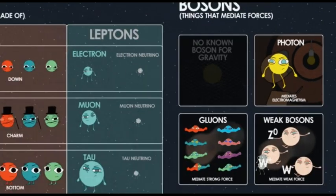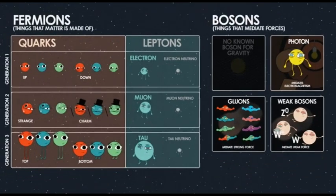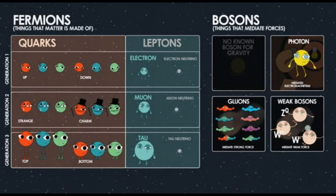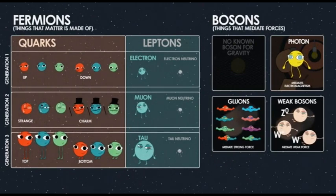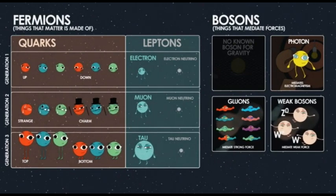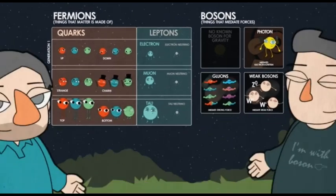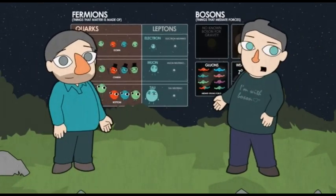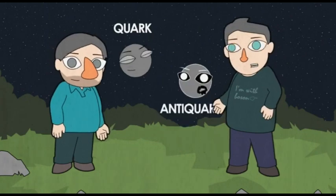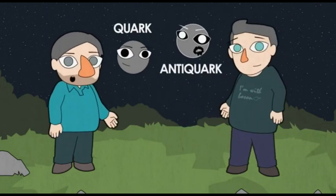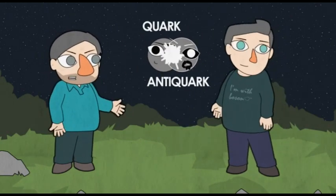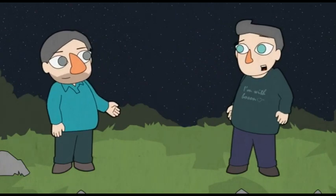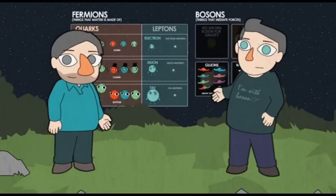So we have 12 bosons, 18 quarks, and 6 leptons. Are we done now? No — it turns out that every particle has an anti-particle. That's right, anti-matter — the thing that explodes when you put it with normal matter. Every single particle has an anti-partner.